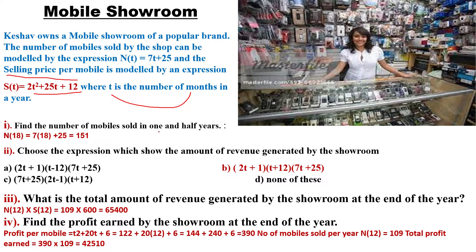How many months are in one and a half year? I think 18. You have to put the value t = 18 months in the given polynomial n(t) = t + 25. So the number of mobiles sold is 151. Second question: choose the expression which shows the amount of revenue generated by the showroom.